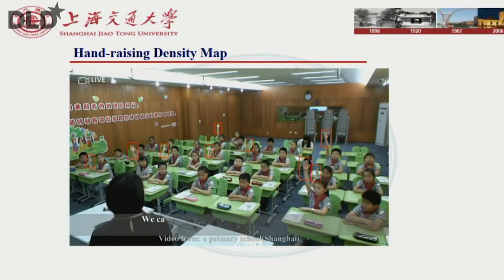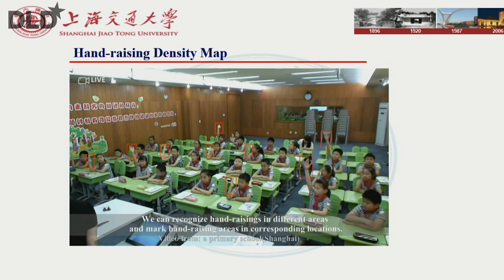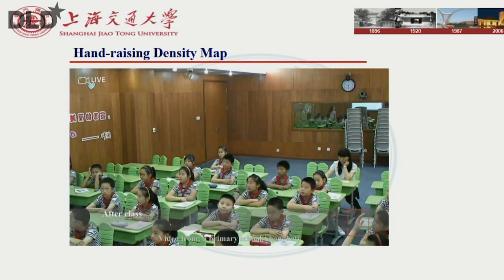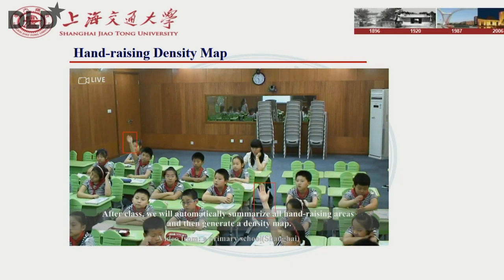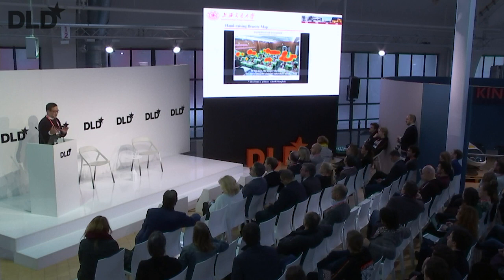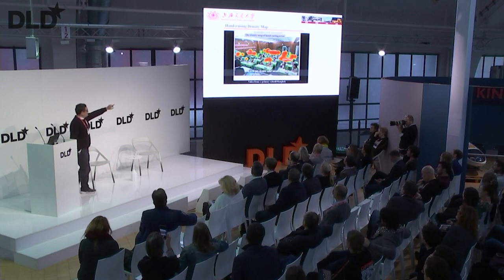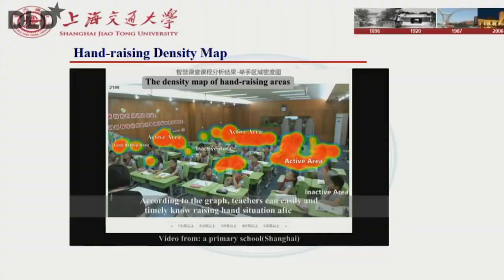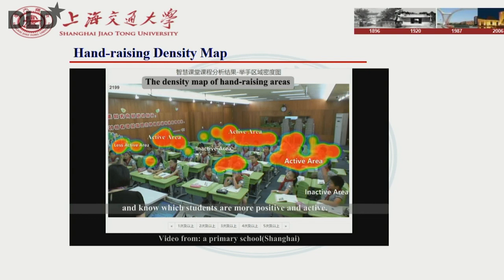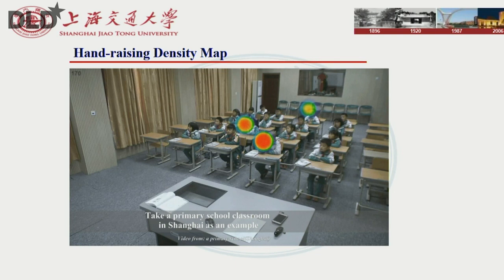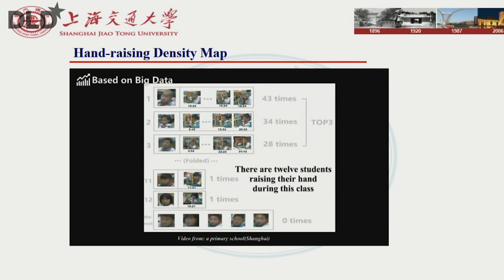We detect hand raising in real time during class and mark raising areas on a classroom map corresponding to seat locations. Some parents ask teachers to change their child's seat — perhaps because the child never raises their hand, possibly due to shyness or other factors. We also produce a hand-raising frequency map, and we can clearly see which areas of the classroom have students who raise their hands more often.